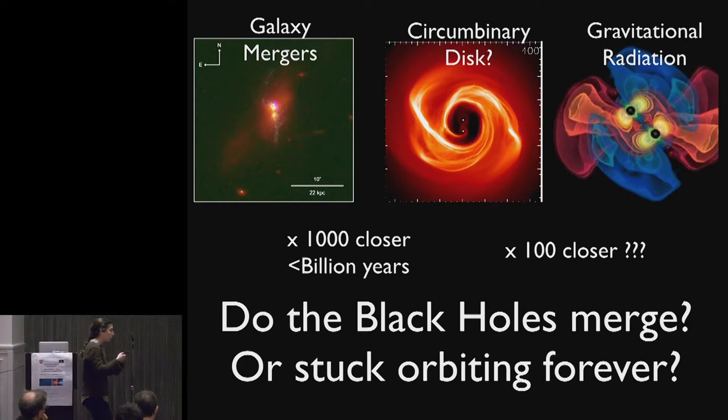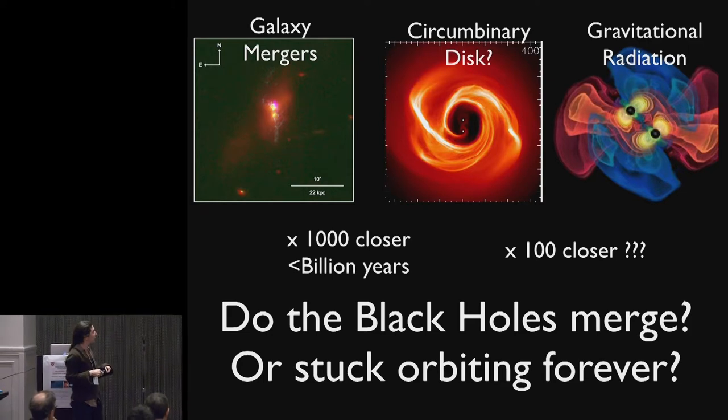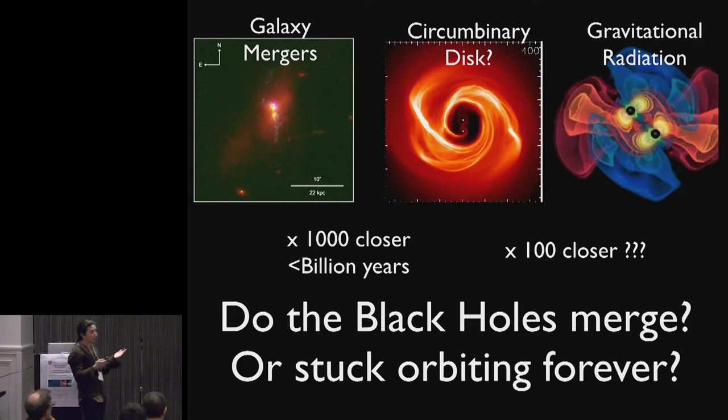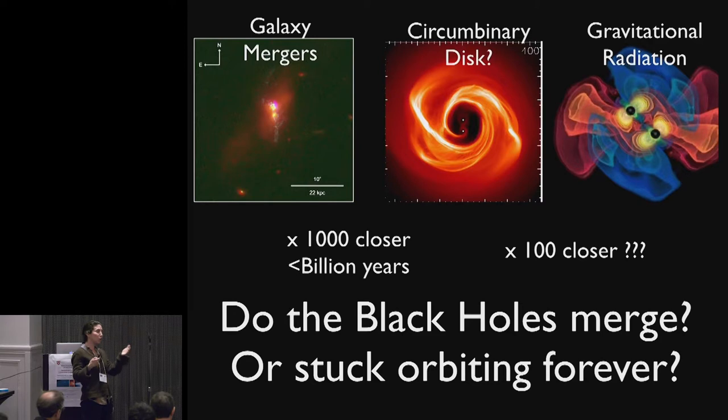And they will then be able to get closer by ejecting stars and dissipating their energy and angular momentum. But at some point, they're going to run out of stars when they're about a parsec apart, a few light years.